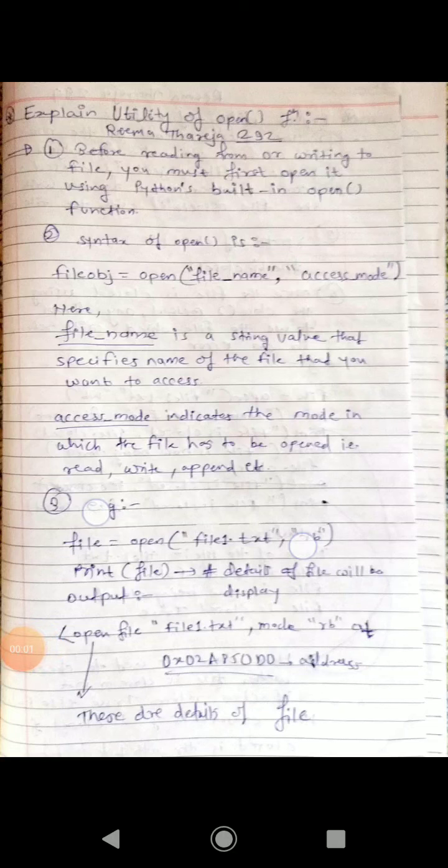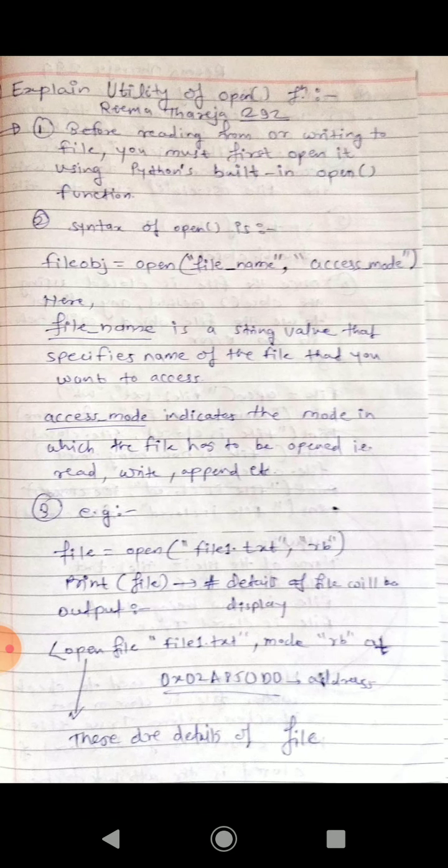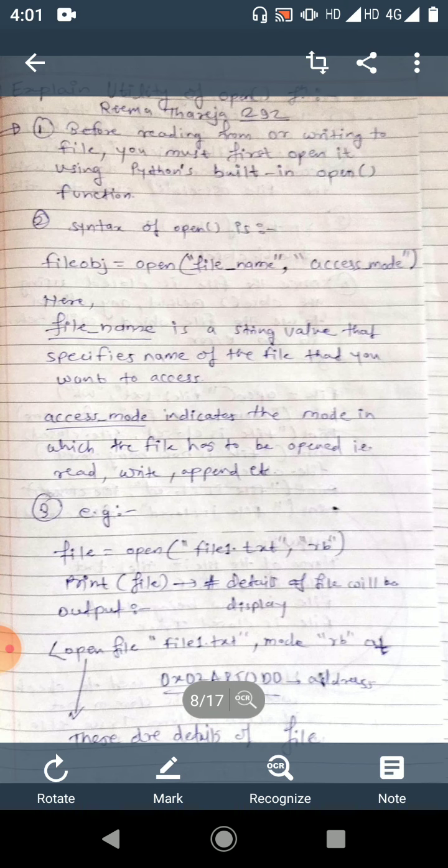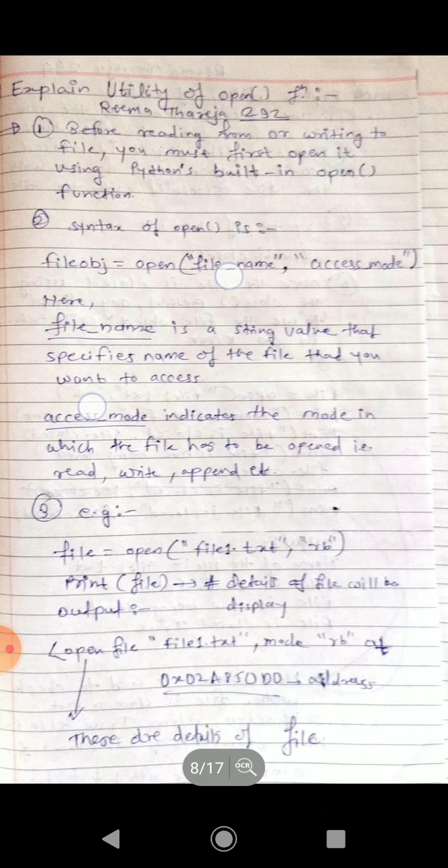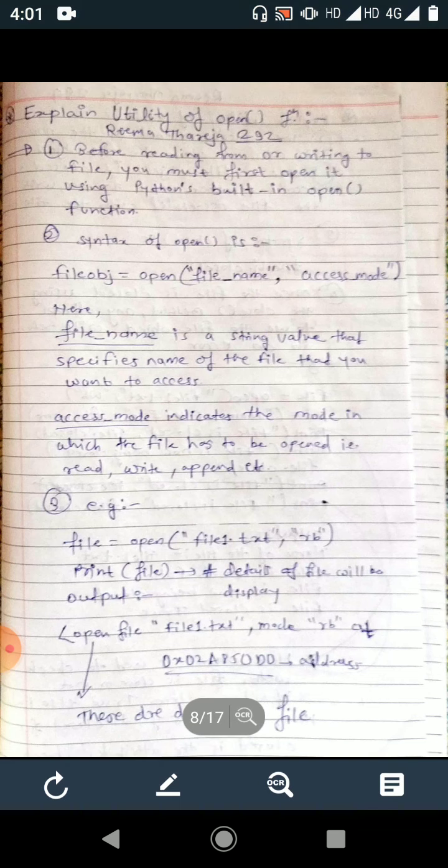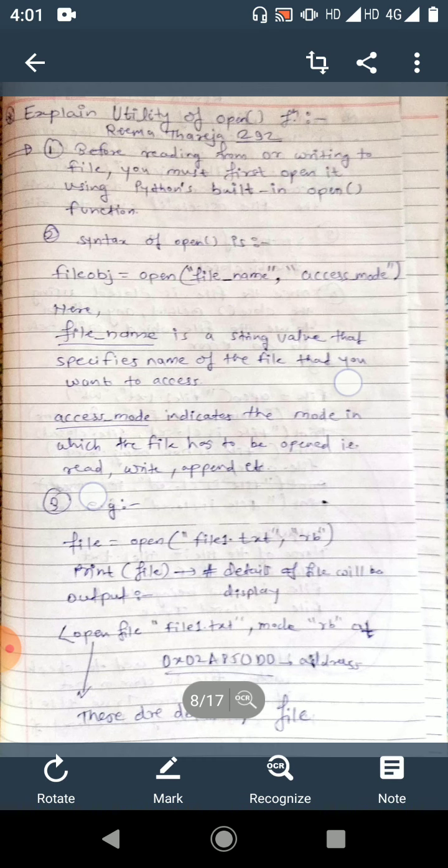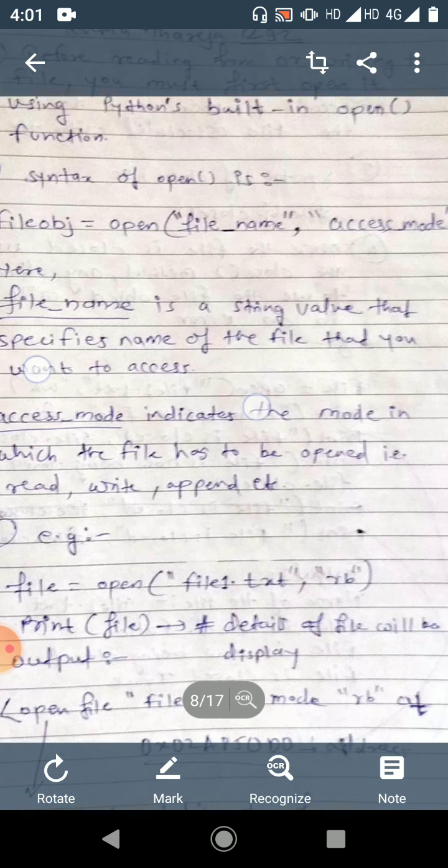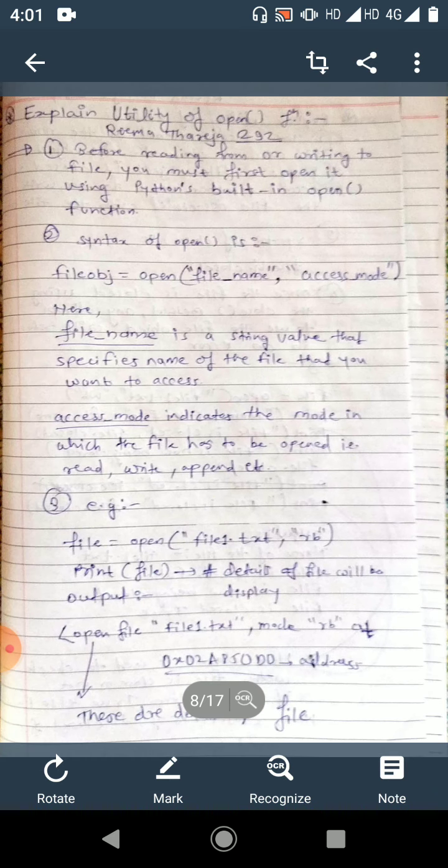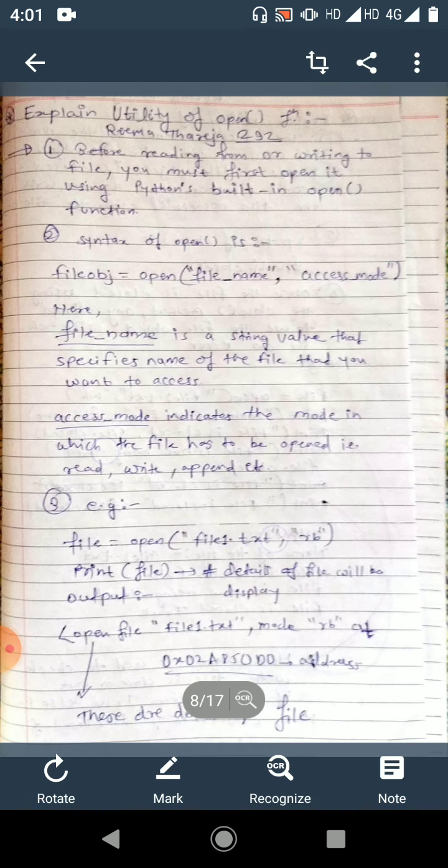Good afternoon friends, next topic is utility of open functions. Before reading from or writing to a file, you must first open it using Python's built-in open function. The syntax is: file object equals open, then in double quotes the file name, comma, access mode. The file name is a string value that specifies the name of the file you want to access. Access mode indicates the mode in which the file has to be opened, that is read, write, append, etc.